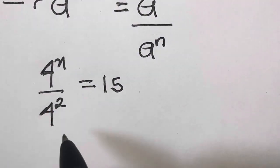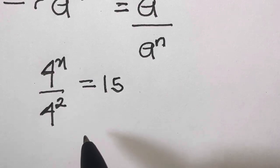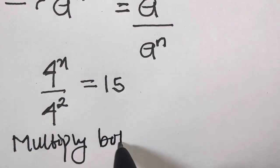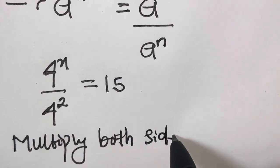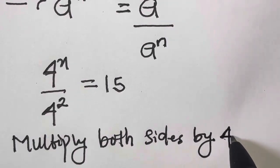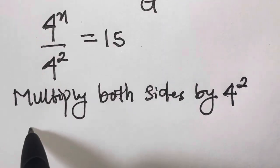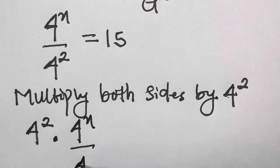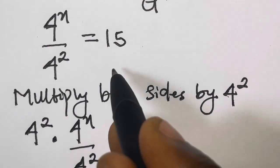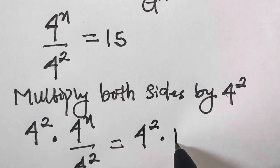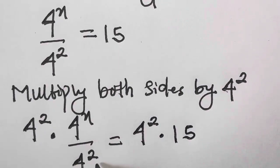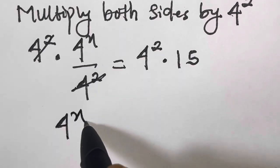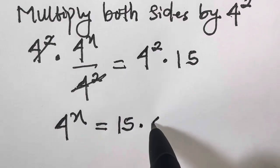So now, from here, we multiply both sides by 4 raised to the power 2. We are going to have 4 raised to the power 2 times 4 raised to the power x, divided by 4 raised to the power 2, equals 15 times 4 squared. We cancel out the 4 squared on the left, so we have 4 raised to the power x equals 15 times 4 raised to the power 2.